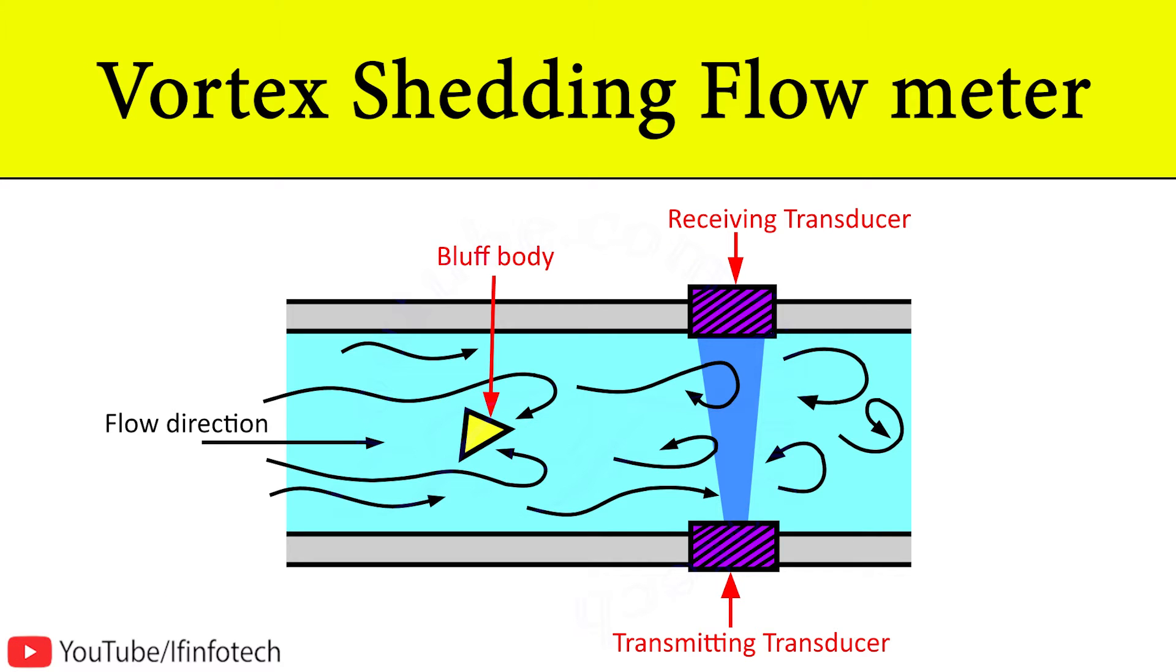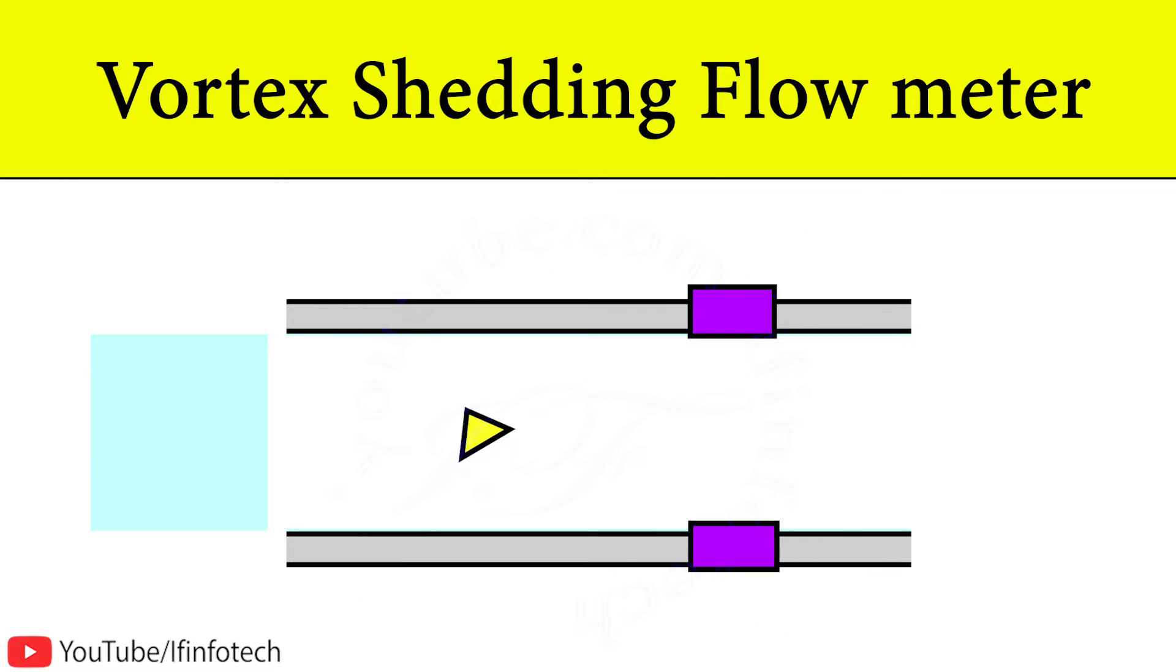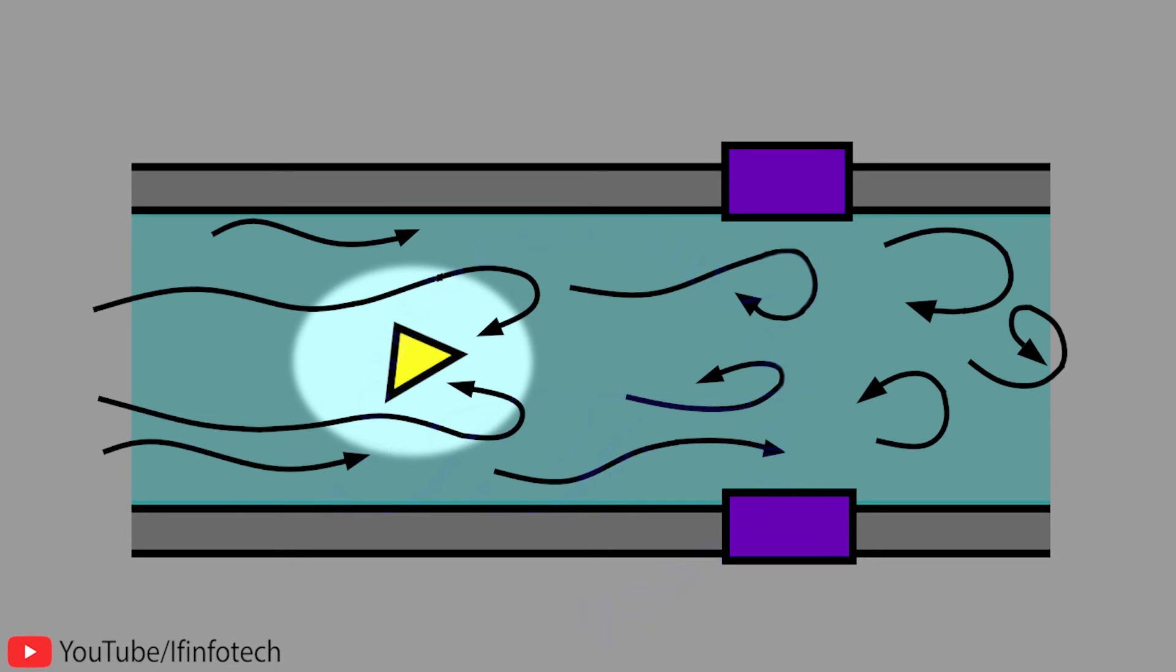In today's session, we will learn about Vortex Shedding Flow Meter. When fluid stream enters the pipe, it separates at the obstruction and moves around the obstructing object.